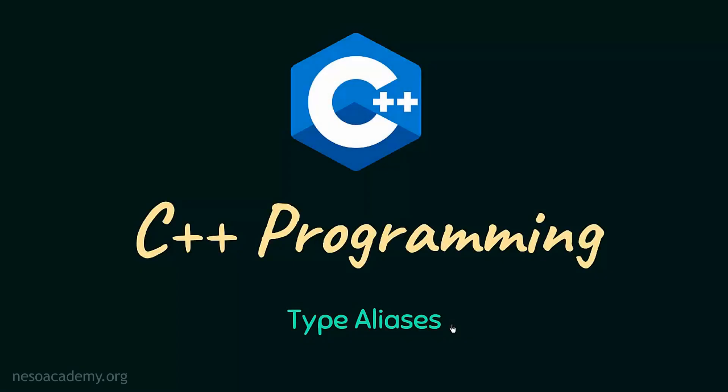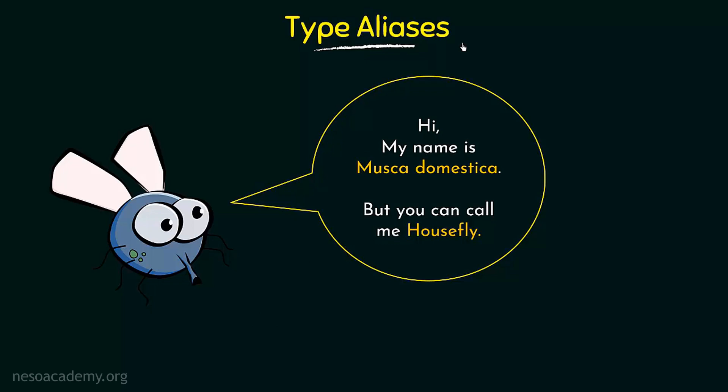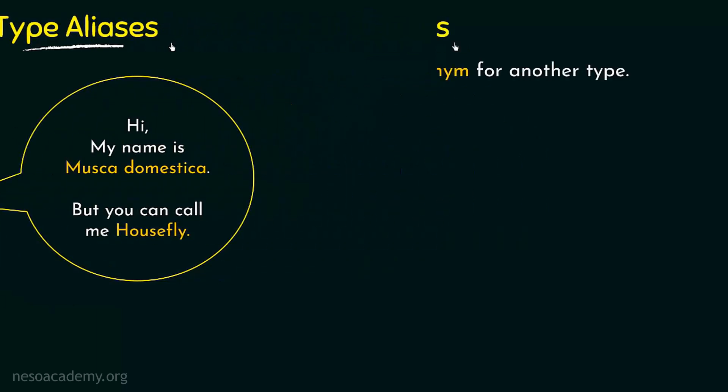In this video, we will discuss type aliases. Let us see what we mean by type aliases and how and for what they are used in the C++ programming language. From the name alias, we know that literally alias means an alternate or a different name that is given to someone. Let us see how this is applicable in C++.